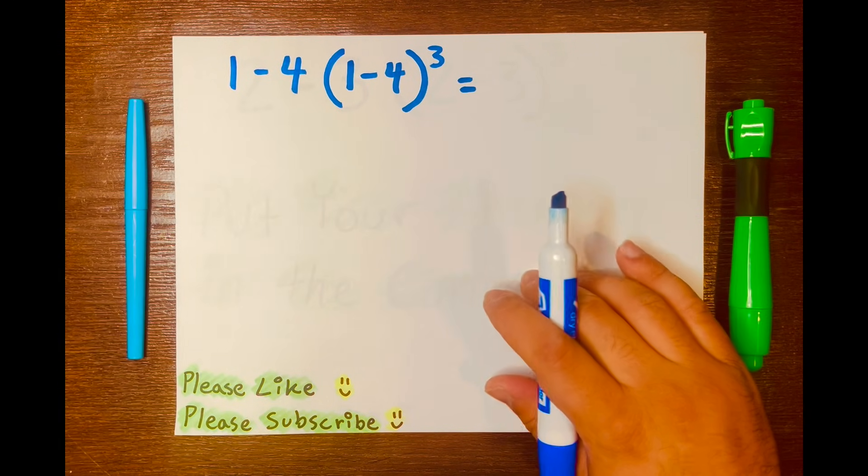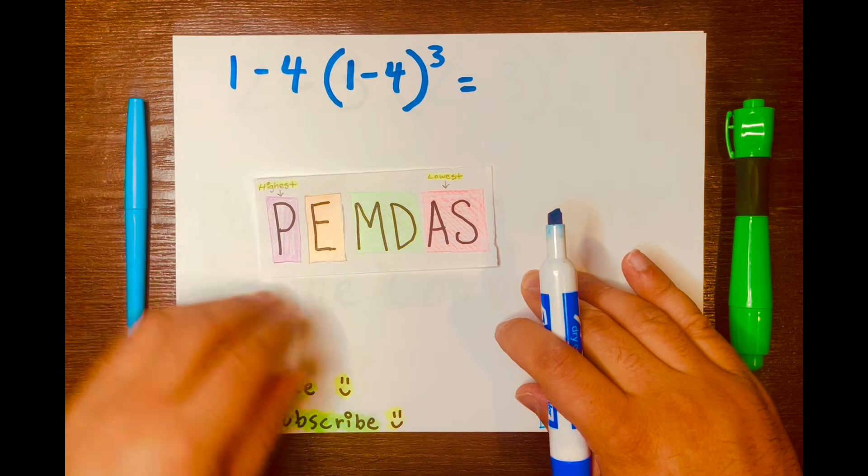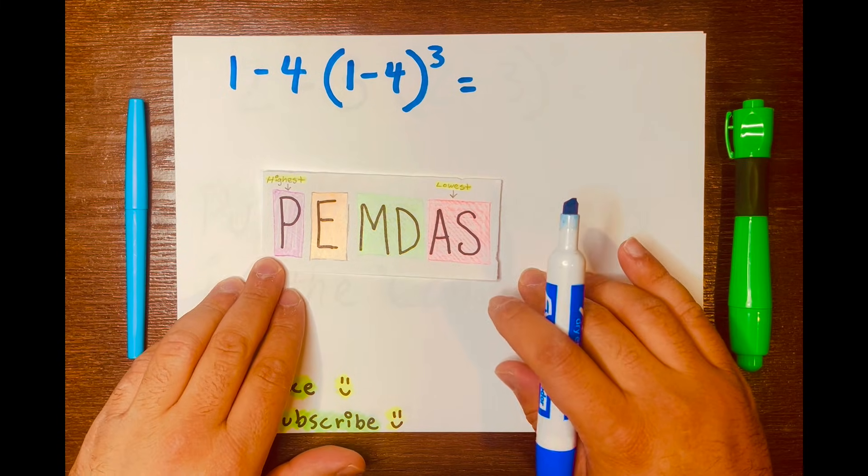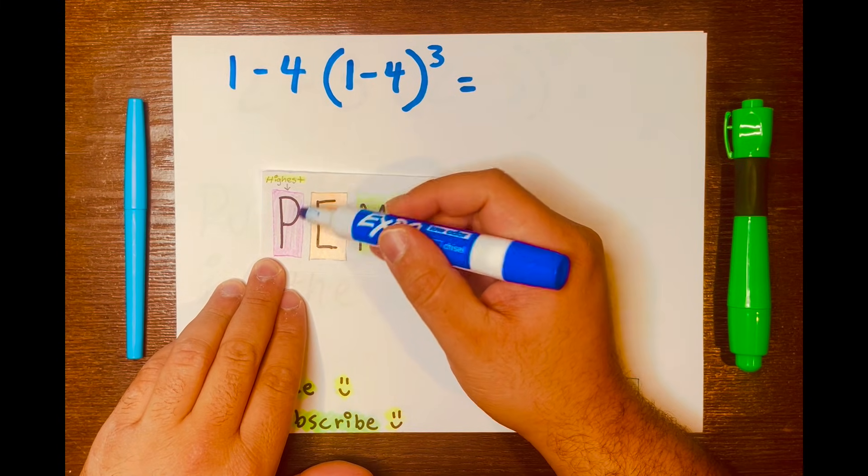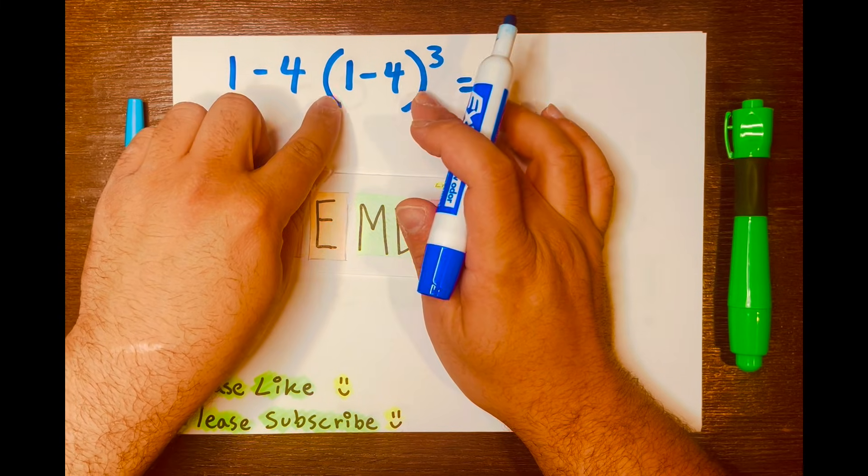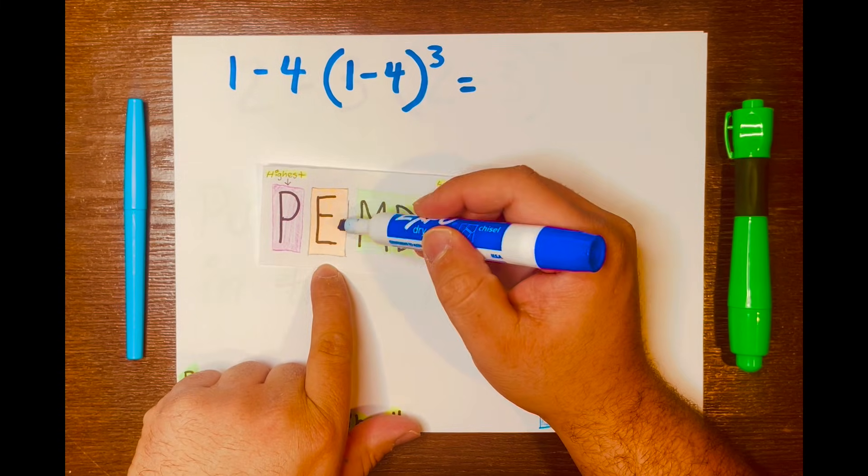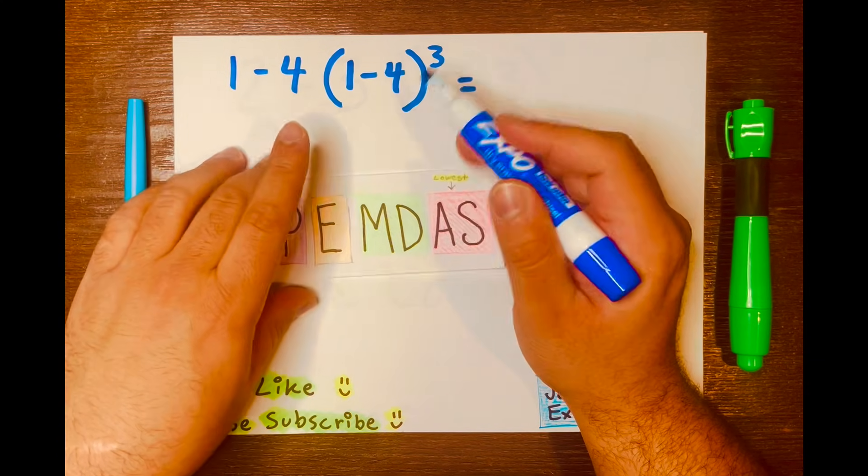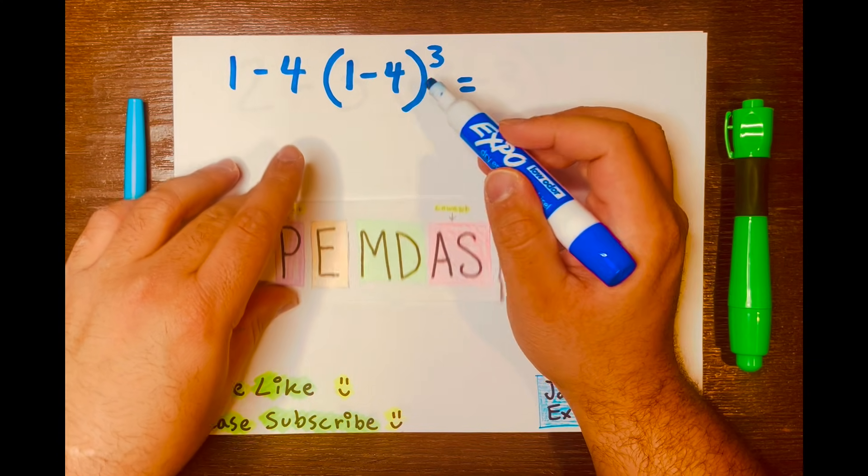Now to start solving this problem, we're going to need the help of PEMDAS. PEMDAS is telling us that parentheses will go first, so whatever's inside the parentheses will go first, and then the exponent, which is the 3. So let's go ahead and solve 1 minus 4.